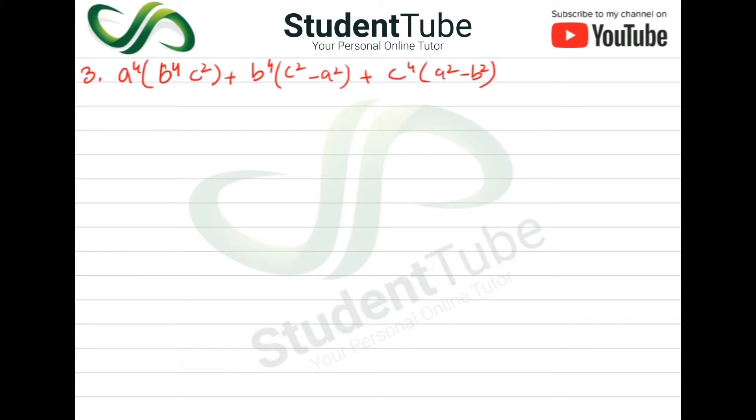First of all, Question 3. We will write: a^4(b^4c^2) + b^4(c^2-a^2) + c^4(a^2-b^2). Now we will multiply this out. It will be a^4b^4c^2, then plus a^4c^2, plus b^4c^2, minus b^4a^2, plus c^4a^2, minus c^4b^2. Now we will connect terms.